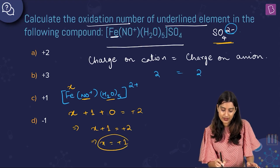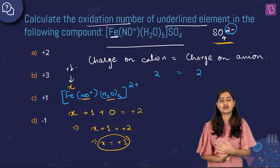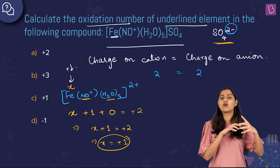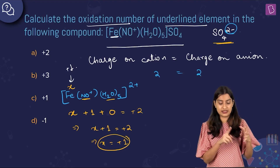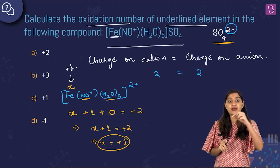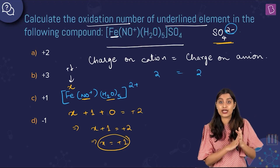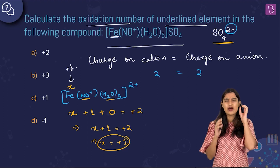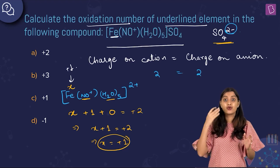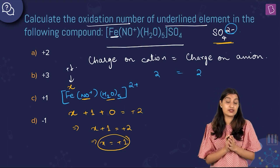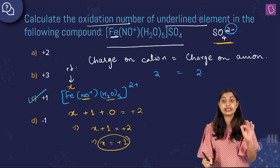Fe has an oxidation state of +1 here. We usually see iron with +2 or +3 in compounds like ferrous sulfate, Fe₂O₃, or FeCl₃, but this is one of the rare cases of iron in +1 oxidation state. This compound is called nitrosoferrous sulfate, also known as the Brown Ring Complex — very important in qualitative inorganic analysis. The answer is option C: +1.